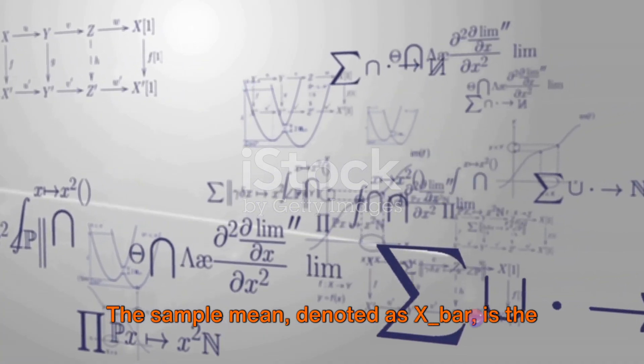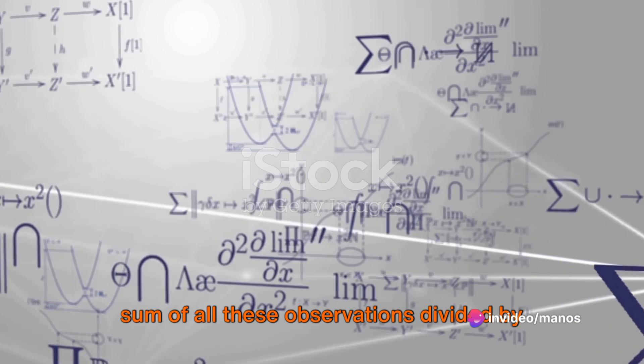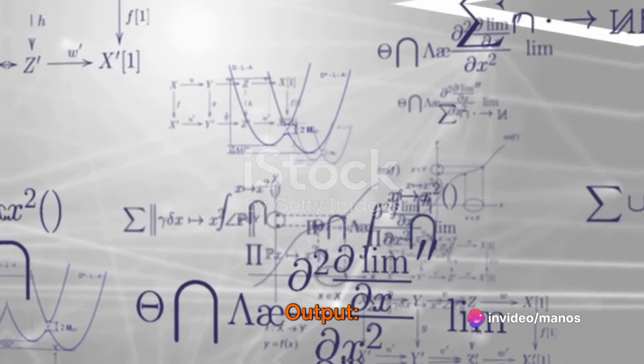The sample mean, denoted as x underscore bar, is the sum of all these observations divided by the sample size n.